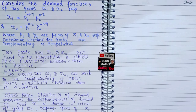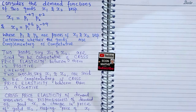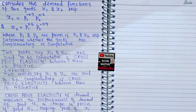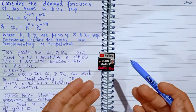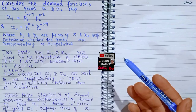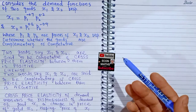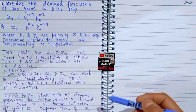Cross price elasticity of demand measures the responsiveness of demand of good x1 to a change in the price of good x2, keeping the price of good x1 constant. To find out whether the two goods are substitutes or complementary, we need to find out their cross price elasticity.